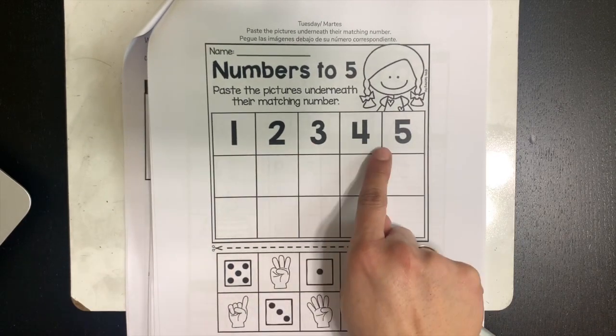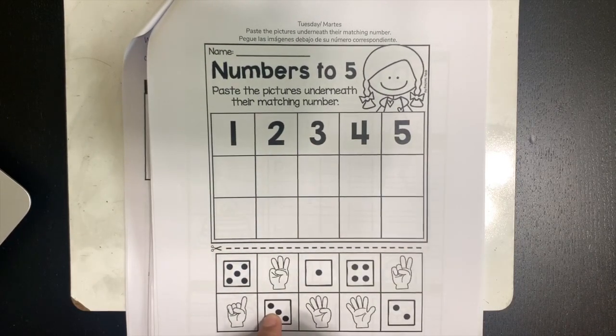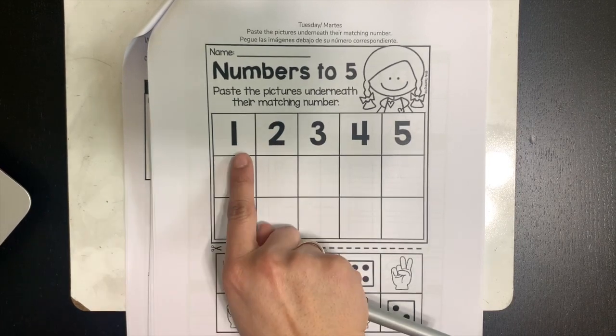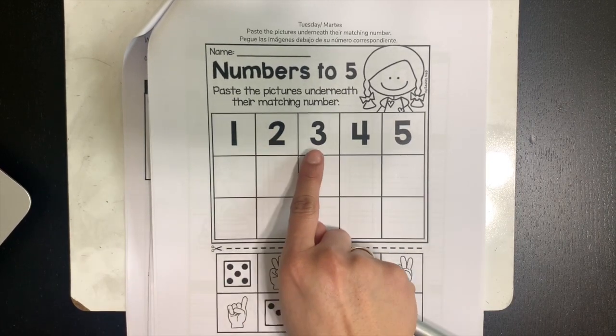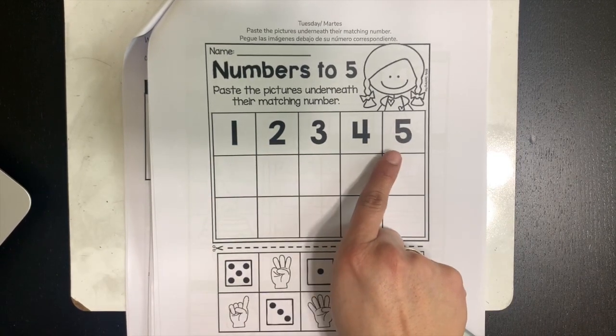We're going to first review the numbers and then we're going to use these pictures down here on the bottom to help us. 1, 2, 3, 4, 5.